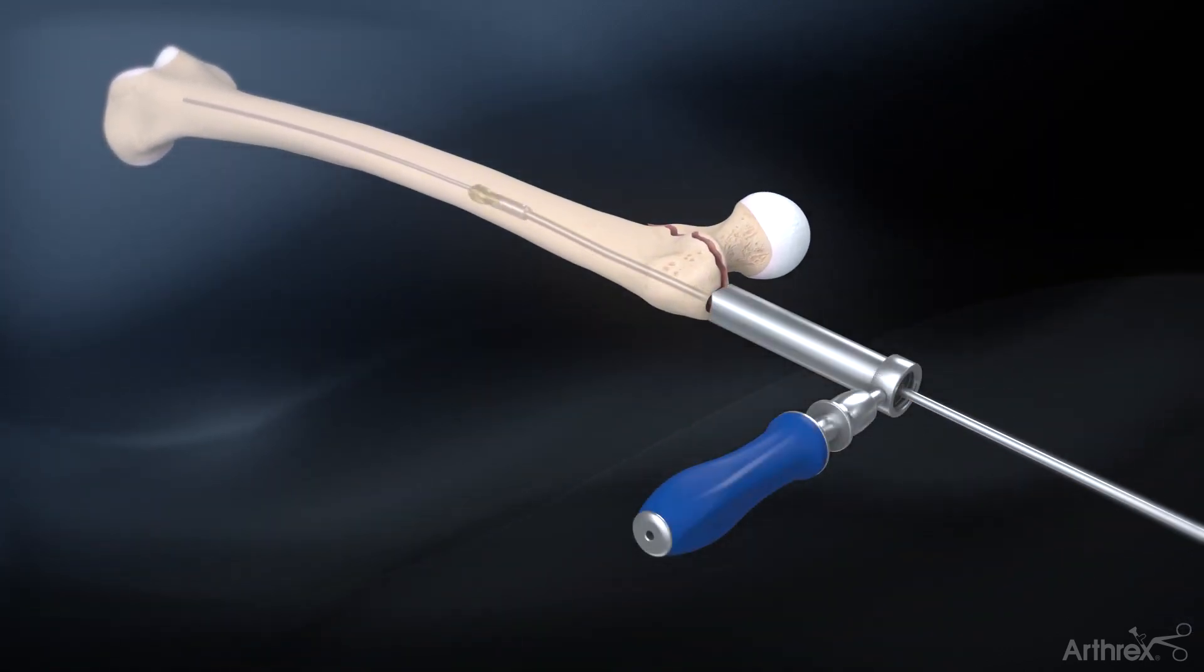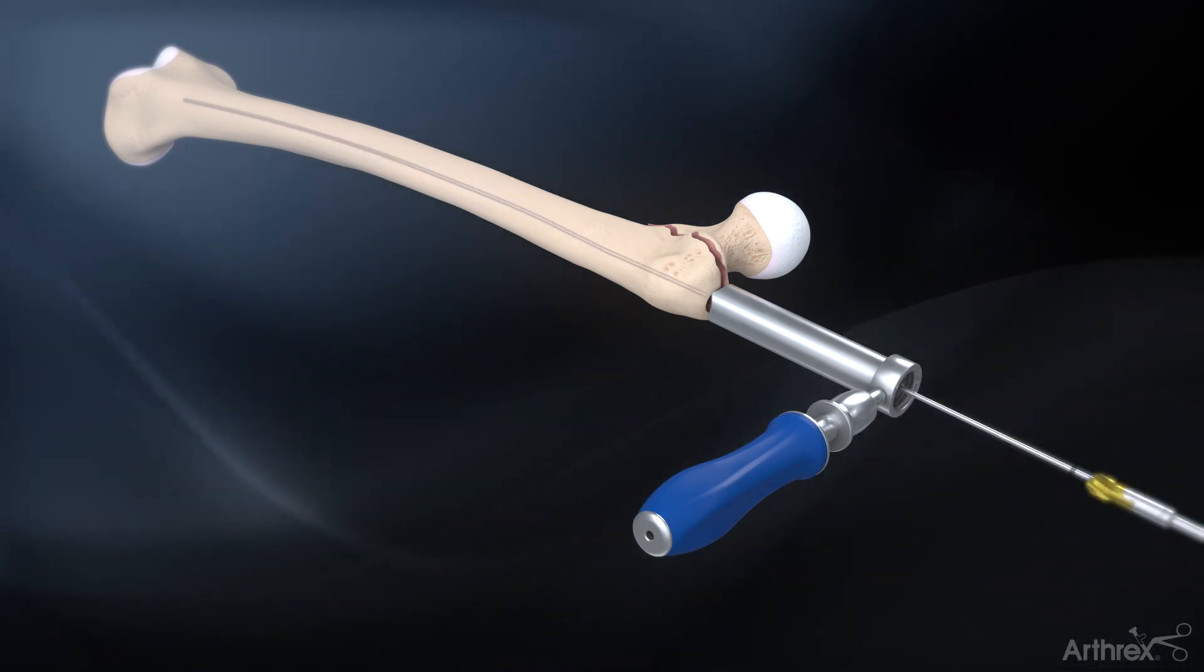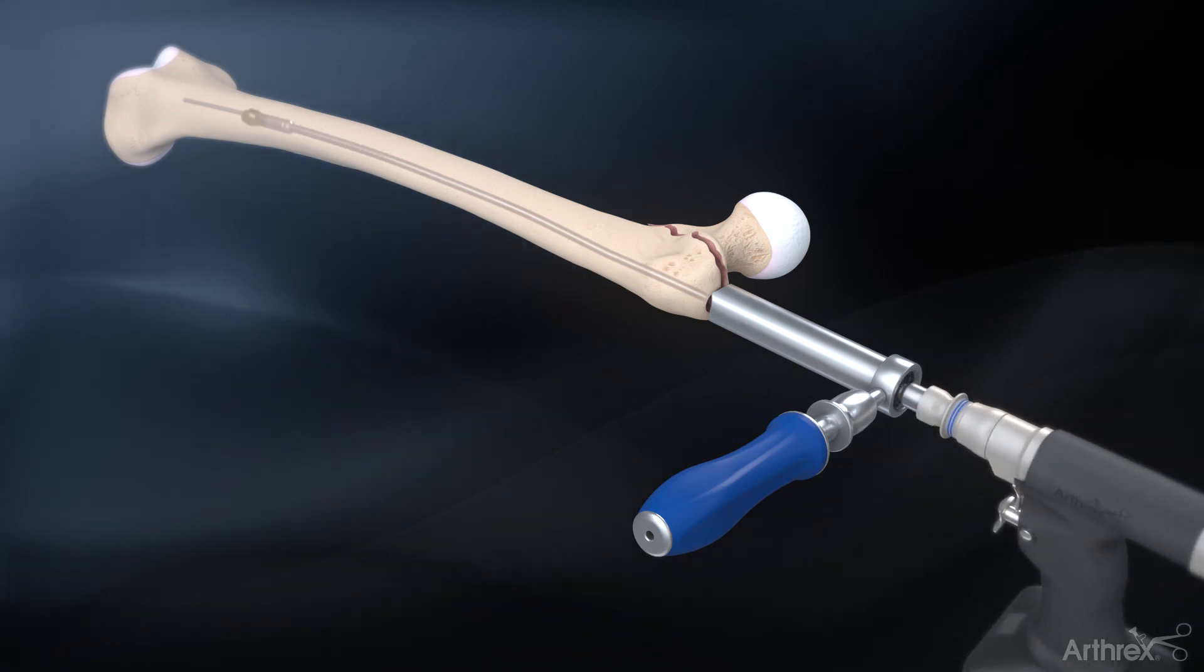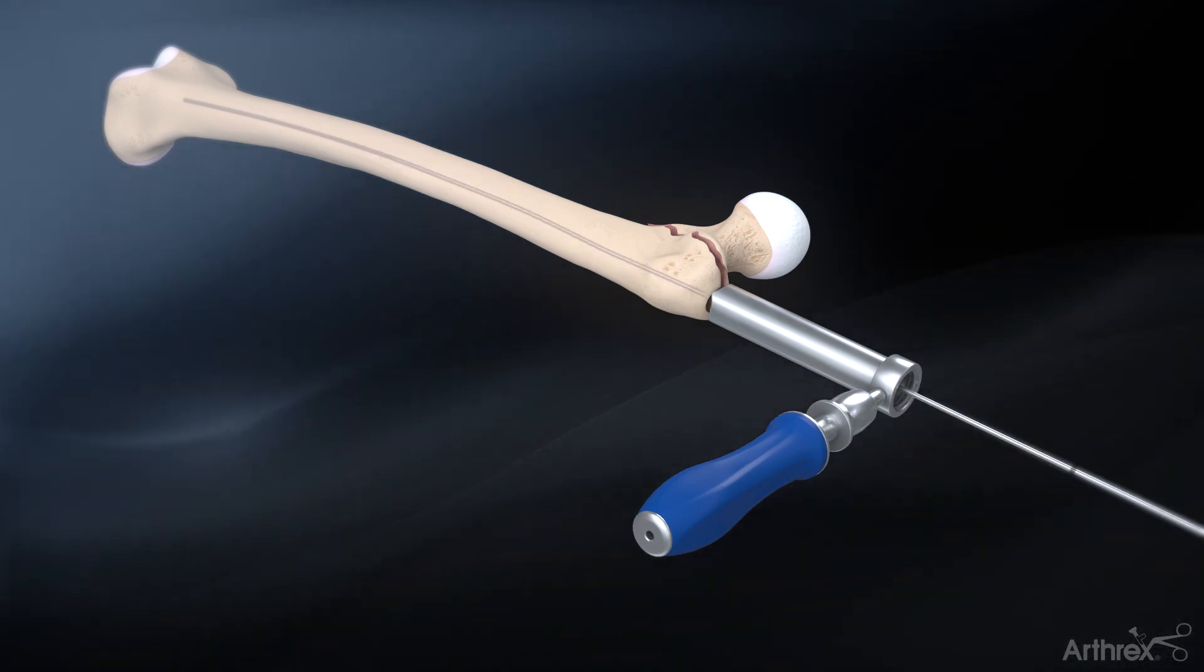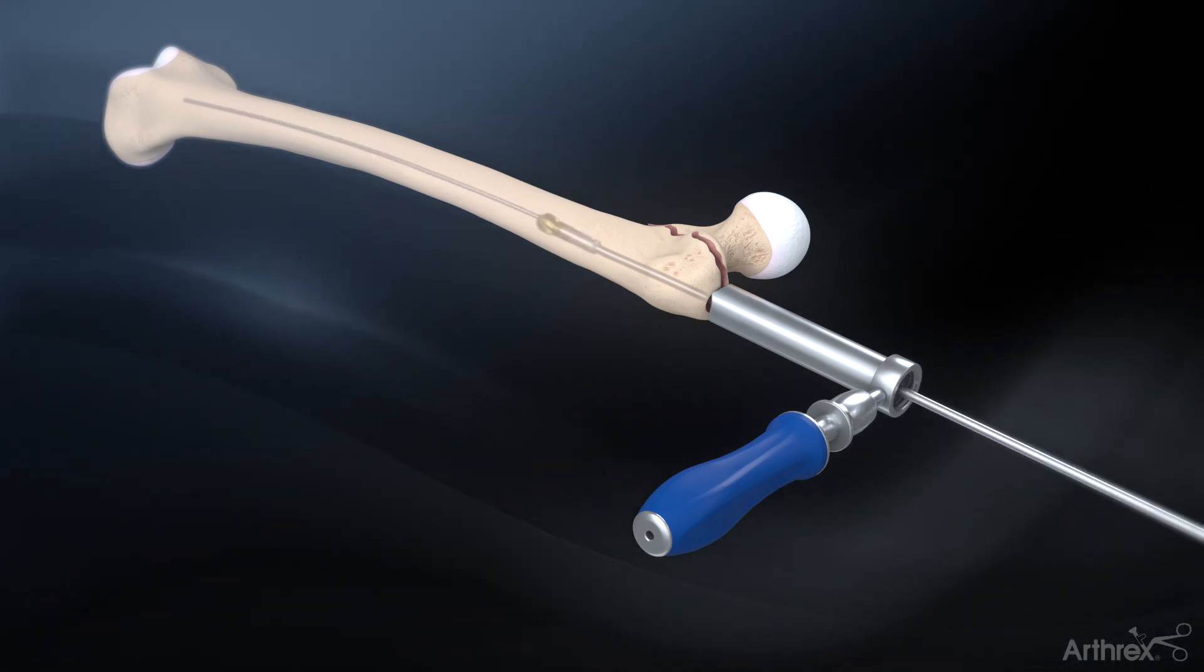Begin reaming with the 8 mm end cutting reamer over the ball nose guide wire. Sequentially ream larger with the side cutting reamers until cortical chatter is achieved. It is recommended to ream at least 1.0 to 1.5 mm over the desired nail diameter.